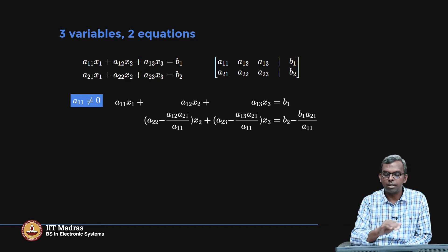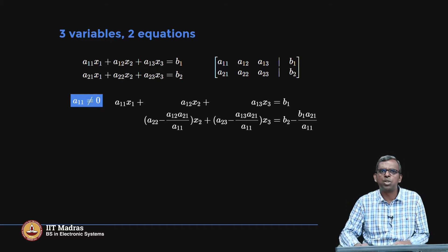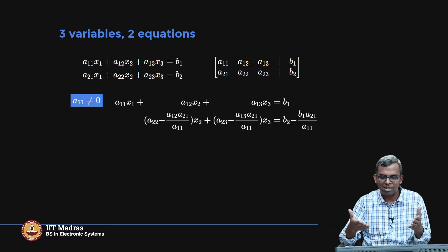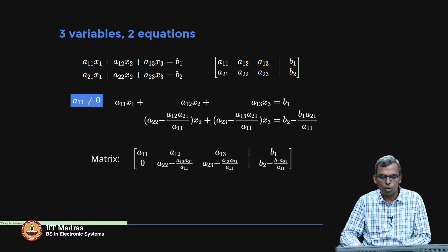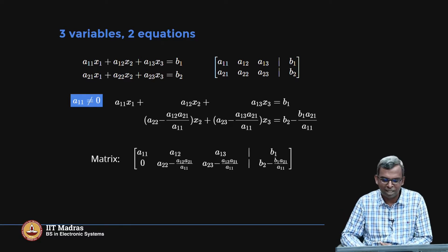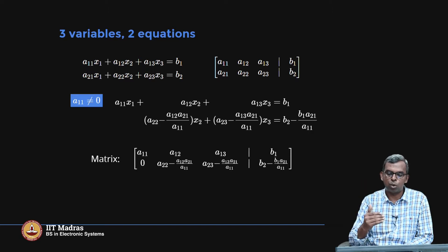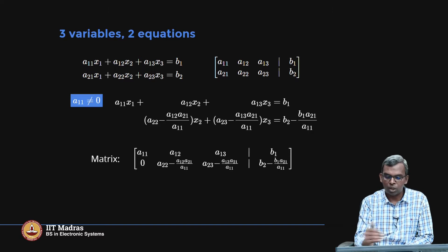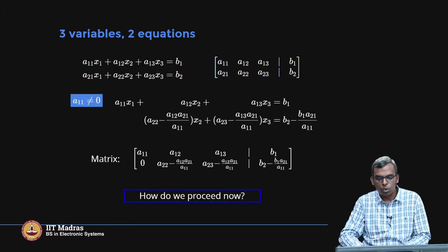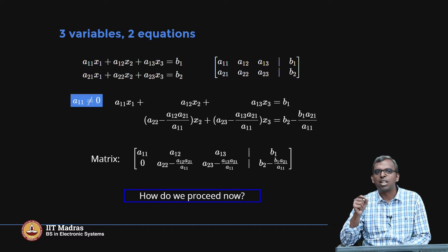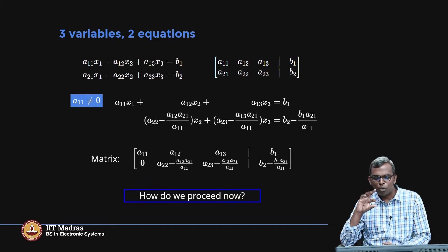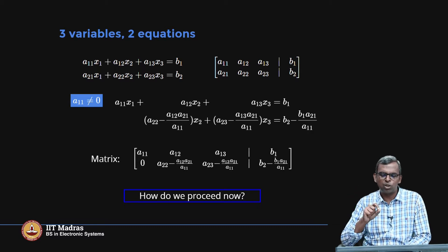That gets rid of x1 and you get this new equation. This still seems new though — we have not seen exactly this form before. Maybe the matrix form will give us a slightly better view. You write the matrix form: the first row remains the same, and the second row gets replaced by second row minus a21 by a11 into the first row. But still, we are stuck — we have not seen this form explicitly before, and herein comes an important little modification.